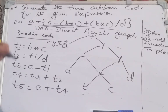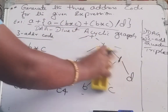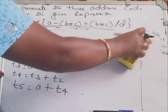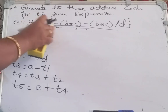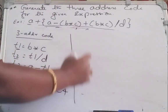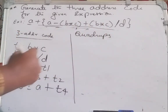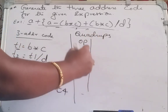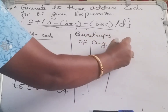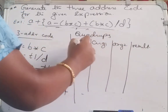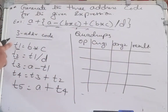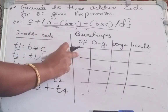Once the three address code is ready, it will be easy to generate the quadruples and the triples. I will now show you how to write the quadruples for the same problem — for a 10-mark question they may ask you to write all the intermediate representations. For this three address code you have to generate the quadruples. As the name suggests it has four variables, so we write it in the form of a table with columns: operator, argument one, argument two, and result.